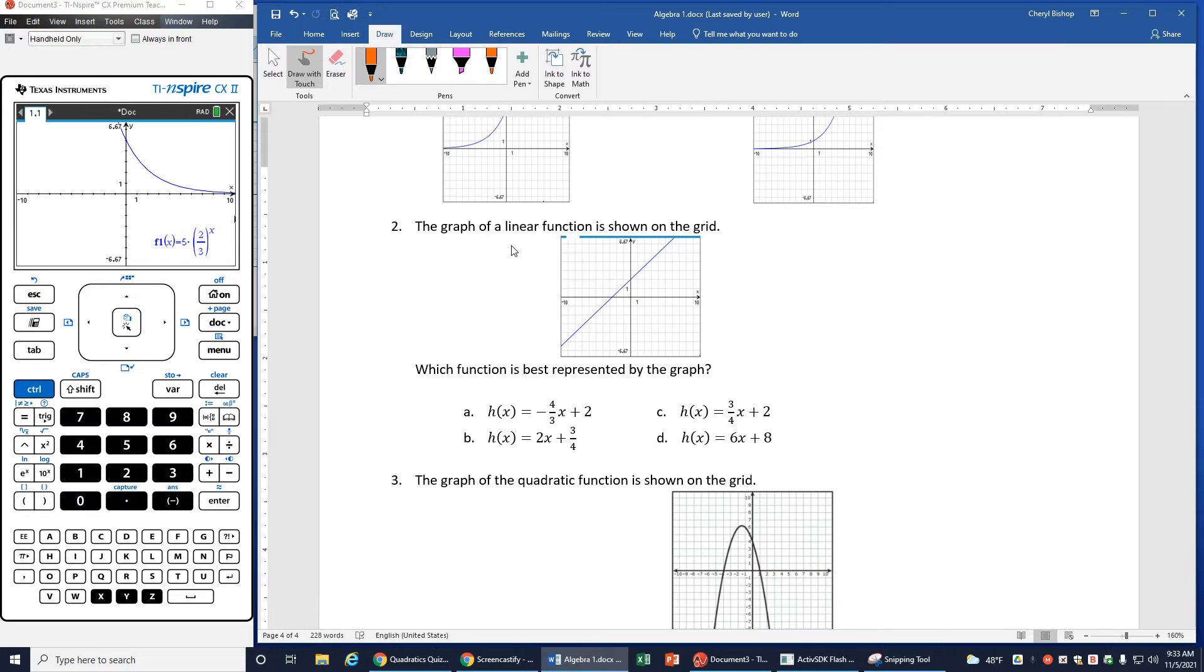The next one, the linear graph, or the graph of a linear function is shown on the grid. So I can see I have this positive sloping line going up and to the right. Which function is best represented by the graph?